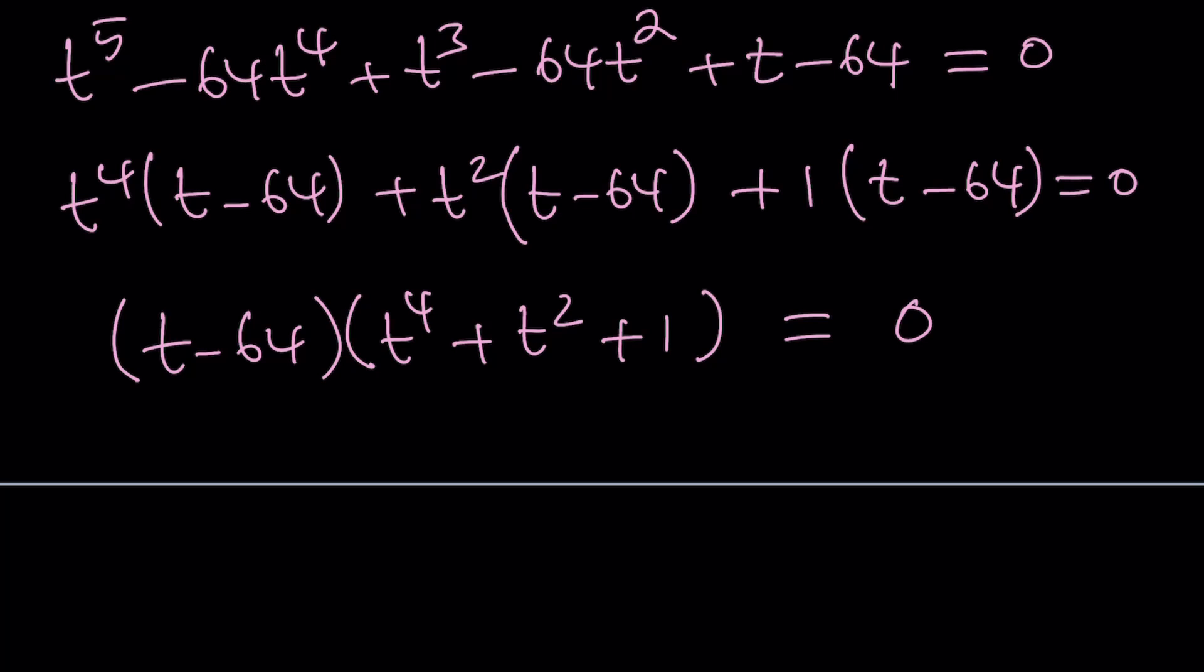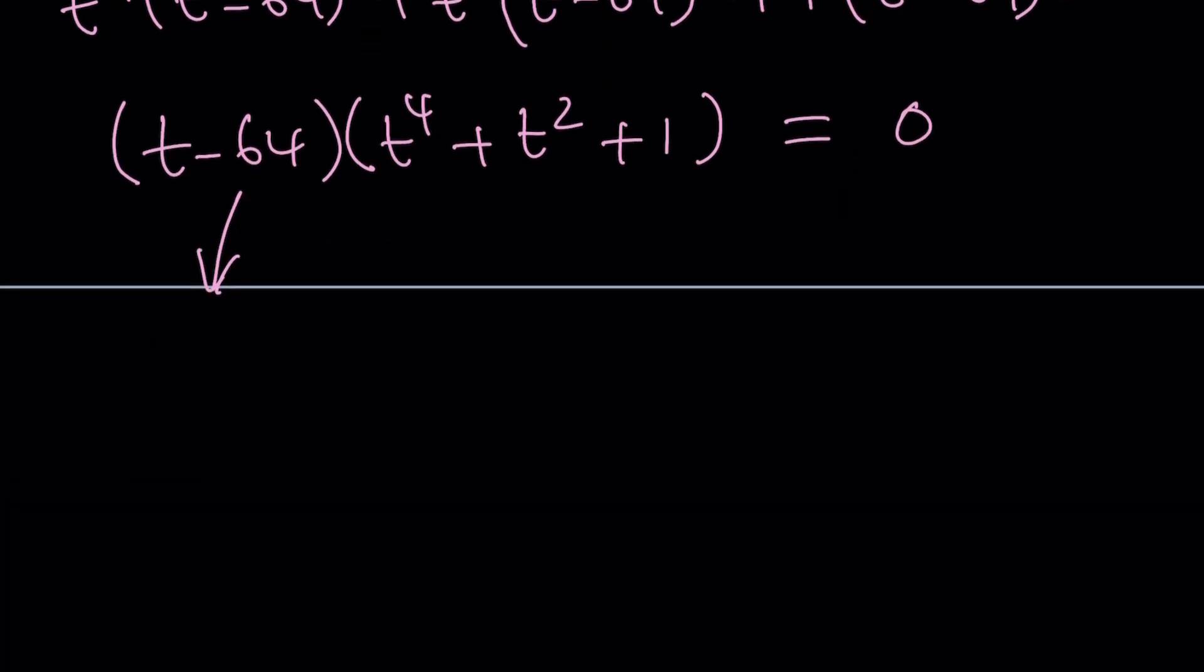So what does this mean? This means t is equal to 64 from here. And remember, t is 2 to the power x. So from here we get x equals 6. Awesome.